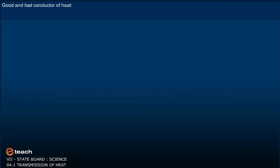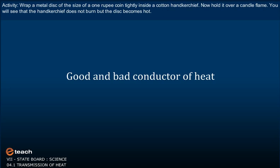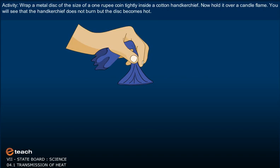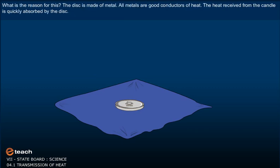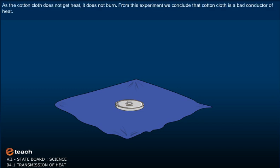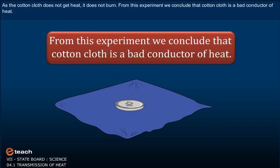Good and Bad Conductor of Heat Activity. Wrap a metal disc of the size of a 1 rupee coin tightly inside a cotton handkerchief. Now, hold it over a candle flame. You will see that the handkerchief does not burn but the disc becomes hot. What is the reason for this? The disc is made of metal. All metals are good conductors of heat. The heat received from the candle is quickly absorbed by the disc. As the cotton cloth does not get heat, it does not burn. From this experiment, we conclude that cotton cloth is a bad conductor of heat.